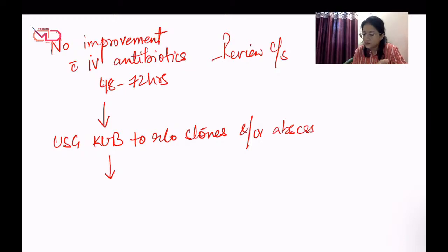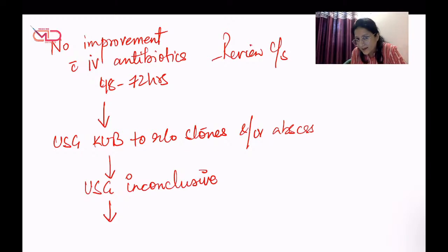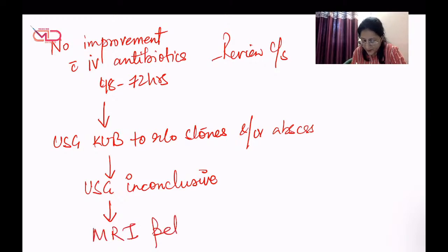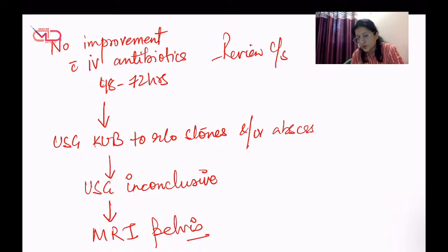Ultrasound can give information about stones or abscess. In pregnancy, sometimes the USG report may be inconclusive. If ultrasound is inconclusive in these scenarios, CT scan is not preferred because of radiation exposure. If ultrasound is inconclusive, we go for MRI pelvis, which can help find out whether it is a renal abscess or stones causing obstructive nephropathy.